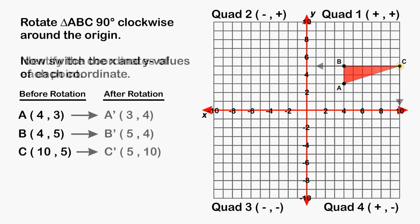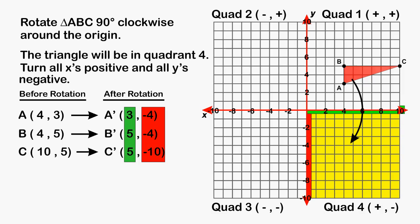After writing the current location of your points, simply take each one of those ordered pairs and switch around the x and the y values. So for (4, 3), we switch it to (3, 4). For (4, 5), we change that to (5, 4). And (10, 5), we change to (5, 10). Now, after you switch around the x and the y values, you have to take care of your negative and positive signs, and that is done by figuring out which quadrant you are rotating to. Because the triangle is going to be rotated clockwise, we are going to end up in quadrant number 4, where all of the x's are positive and all of the y's are negative.